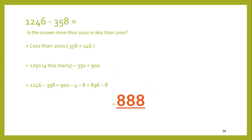The answer to 1,246 minus 358 should be less than 1,000. Again, we could round — 1,250 minus 350 gives around 900, but I had 4 too many in the first number and took away 8 less than I should have. I only took away 350 instead of 358, so I need to take 4 and 8 — that's 12 — away from 900, which leaves 888.